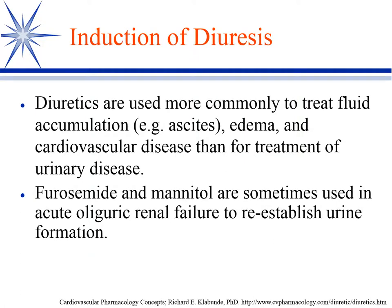Since we're talking about the urinary system, we need to talk about diuretics. We do use diuretics in renal disease, but mostly in oliguric renal failure. Instead, we use diuretics really for a lot of other diseases — anywhere we have fluid accumulation, edema, cardiovascular disease associated with fluid retention, and some others. We use diuretics for those rather than for renal activity.